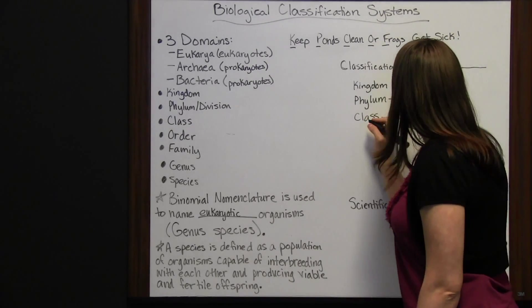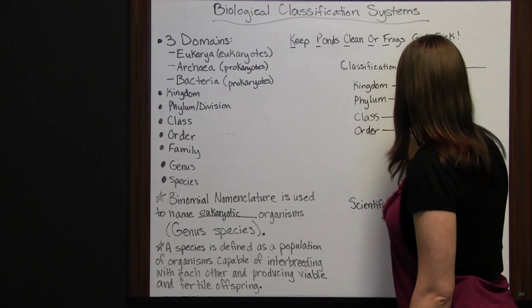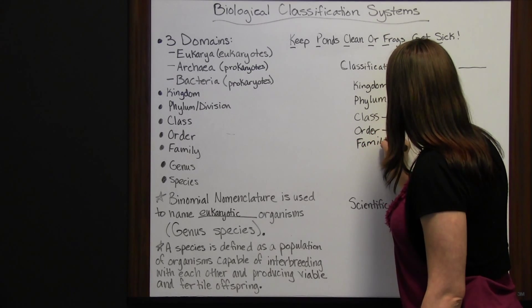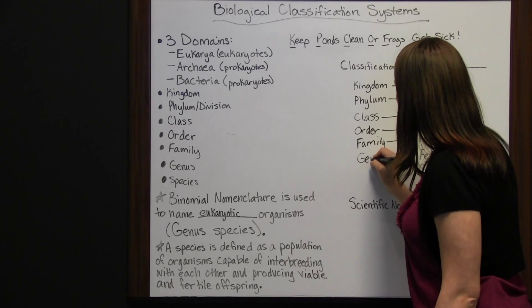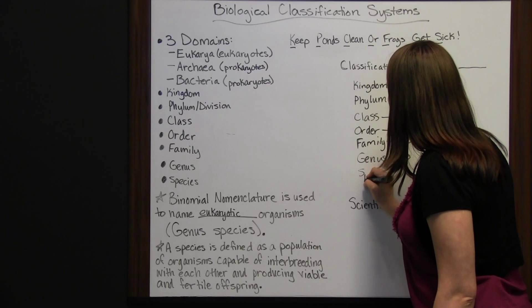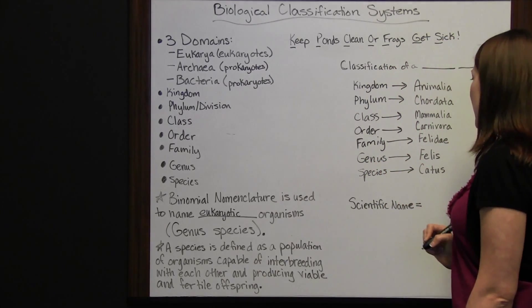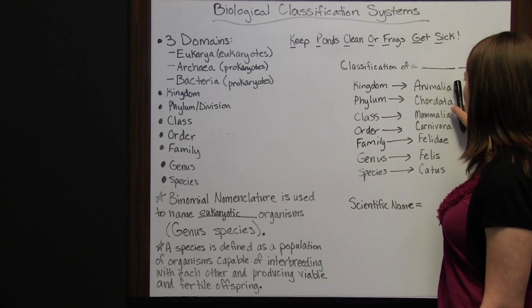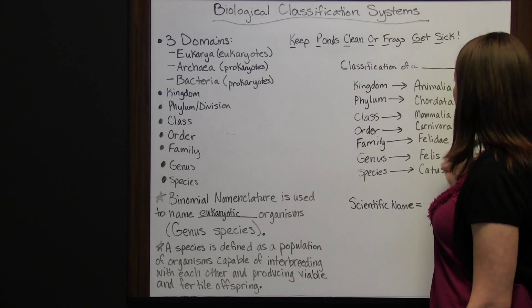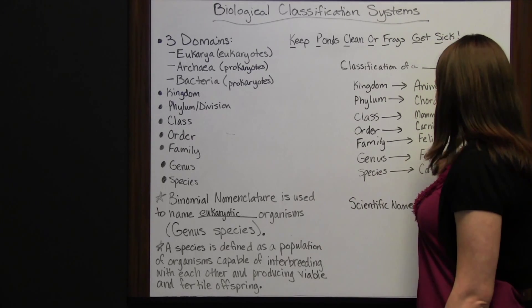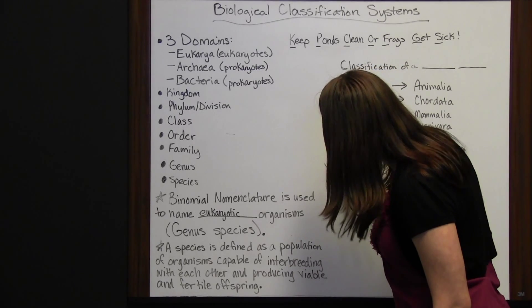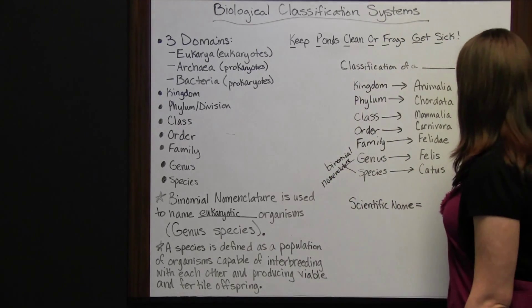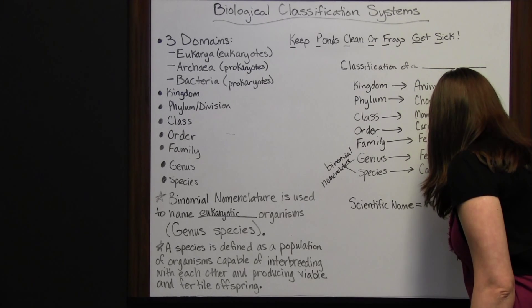The order is Carnivora, which includes carnivores — animals that can eat meat. Family is Felidae, genus is Felis, and species is catus. Your scientific name is found using binomial nomenclature. You know this is a eukaryotic organism because it's in Kingdom Animalia, making it a eukaryote in Domain Eukarya. Using our genus and species, the creature is known as Felis catus.